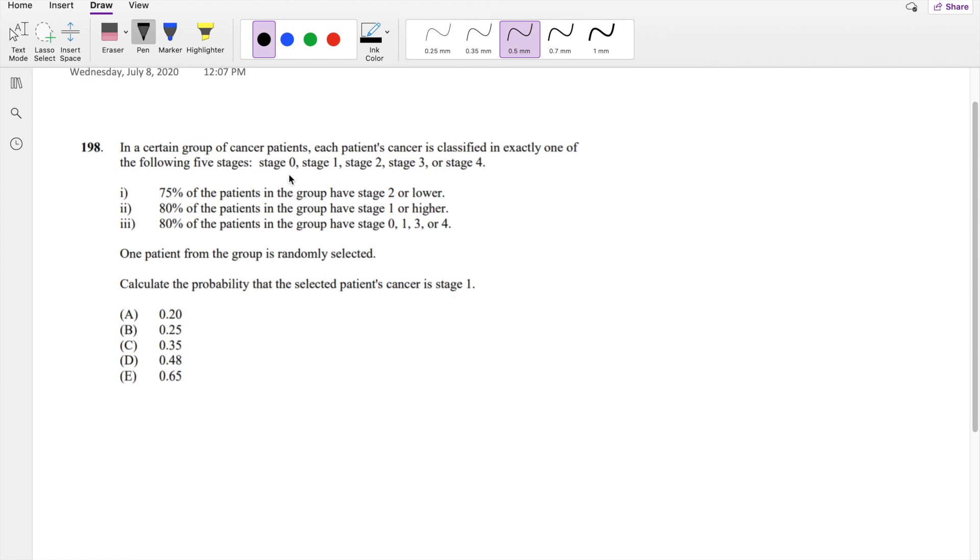Okay, so they're saying that a patient has stage 0, stage 1, stage 2, stage 3, or stage 4 cancer, which is mutually exclusive, meaning you can't be stage 0 and stage 2 cancer at the same time, which makes sense obviously.